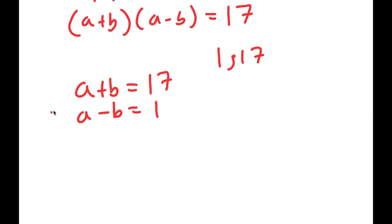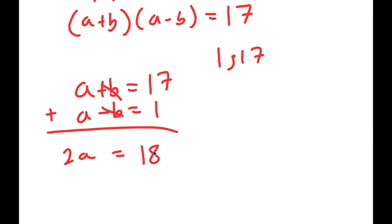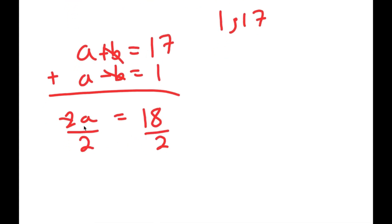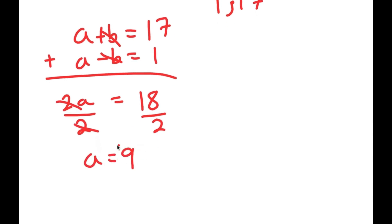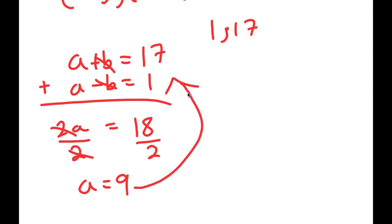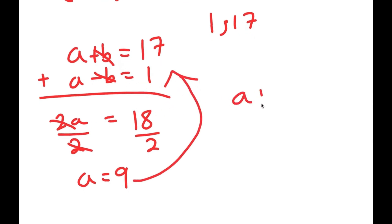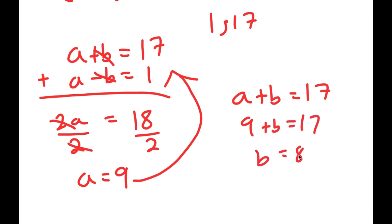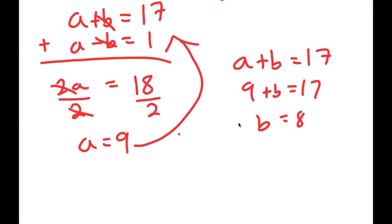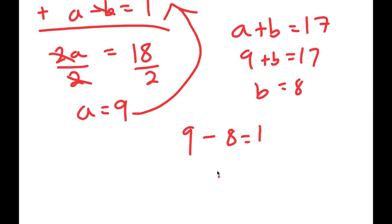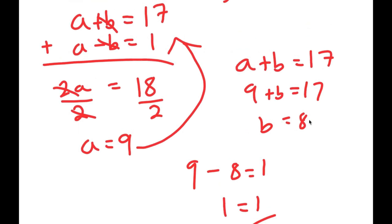Now I'm going to add these two equations together. a plus a is 2a, b minus b cancels out, and 17 plus 1 is 18. So I get 2a equals 18, and if I divide both sides by 2, I get a equals 9. I can plug a equals 9 back into a plus b equals 17: I get 9 plus b equals 17, meaning b equals 8. So a equals 9, b equals 8. We can check: a minus b is 9 minus 8, and 9 minus 8 does equal 1. ✓